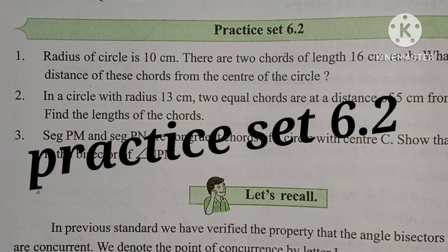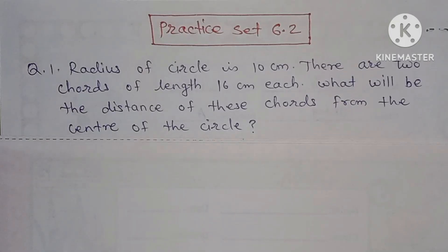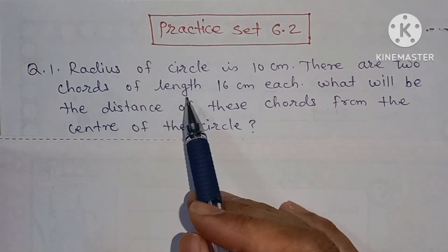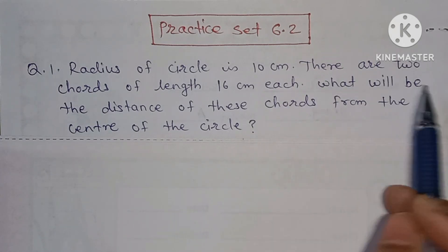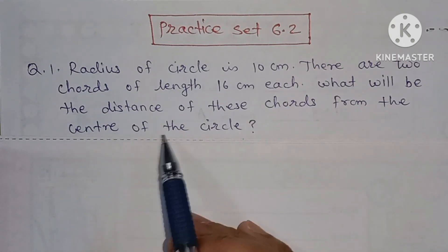Welcome to our education channel. Today we are going to solve Practice 6.2. First question: the radius of a circle is 10 centimeters. There are two chords of length 16 centimeters each. What will be the distance of these chords from the center?